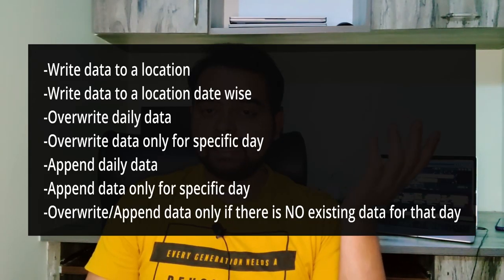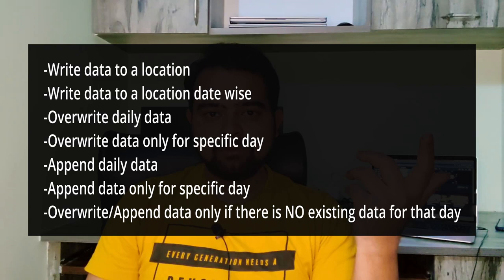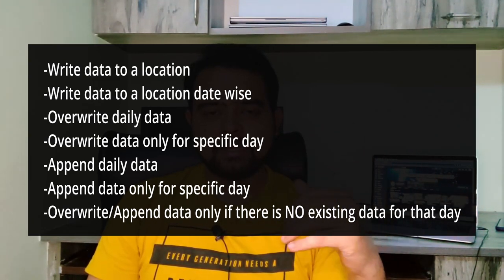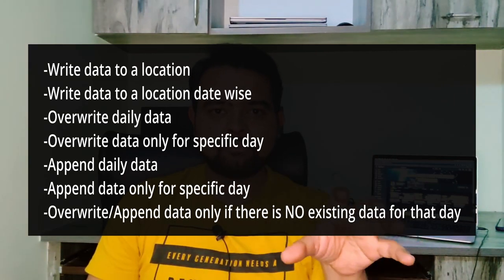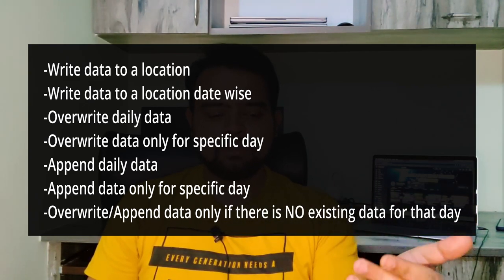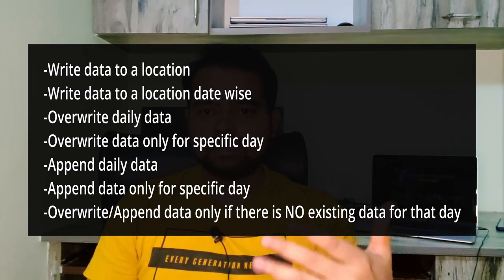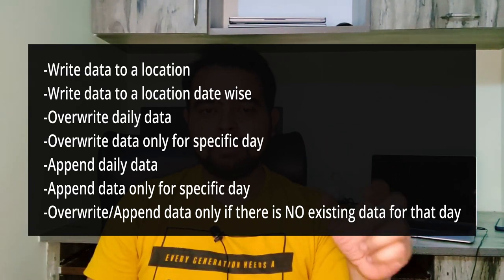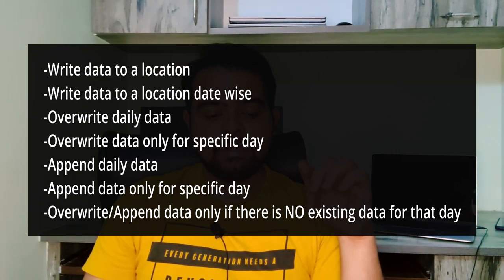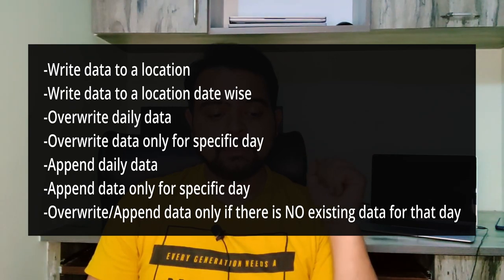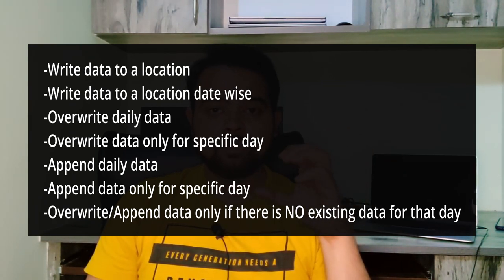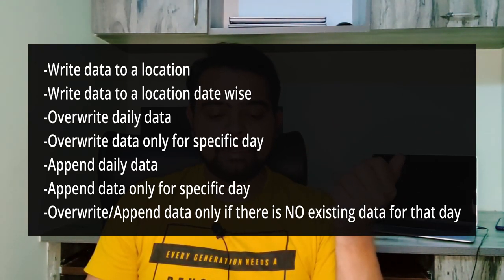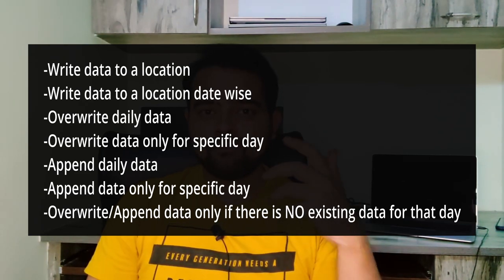The points we'll be discussing are: writing data to a location, writing data date-wise (this doesn't have to be a date — depending on your dataset it can be city-wise, state-wise, gender-wise; I'm just taking date as an example), overwriting the data, overwriting data only for a specific partition or date, appending daily data, appending only for a specific day, and overwriting or appending data only when no data exists for that date.